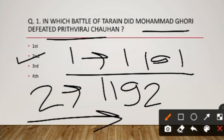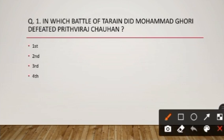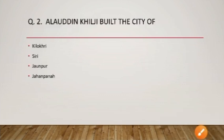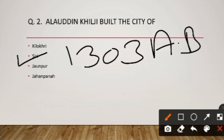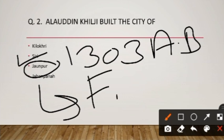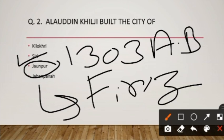Moving on to the next question: Alauddin Khilji built which city? Alauddin Khilji ne Siri namal shahar ki sthapna ki — he established the city of Siri in 1303. And regarding other options, the city of Jaunpur was established by Firoz Shah Tughlaq.